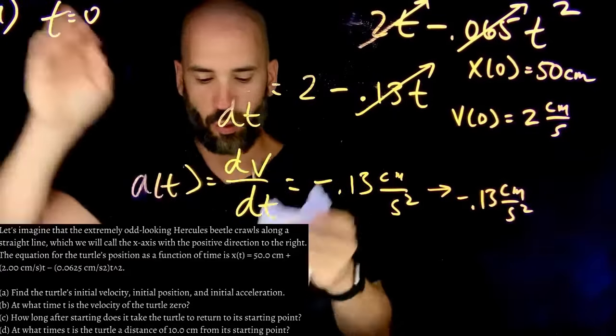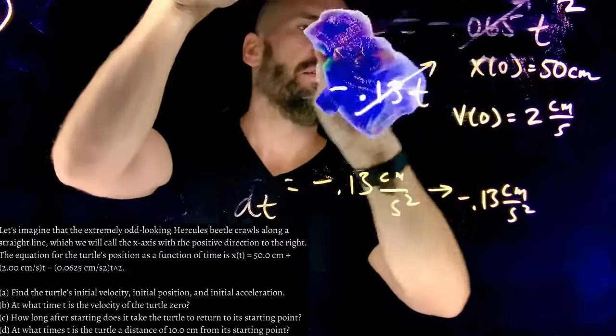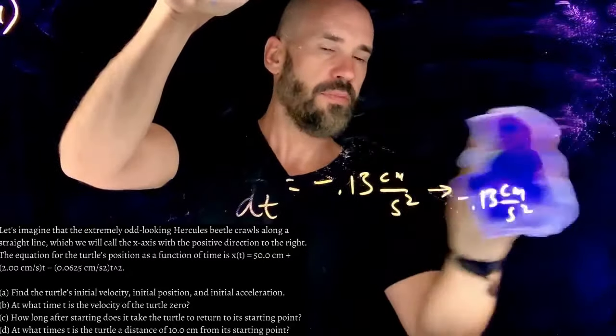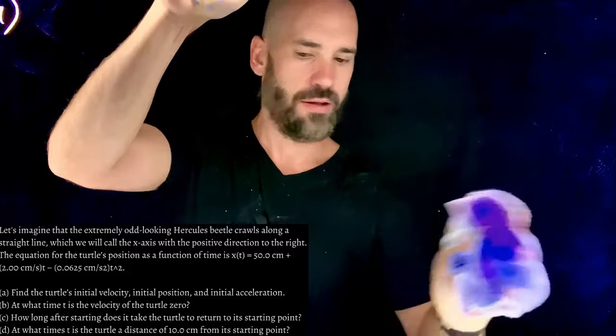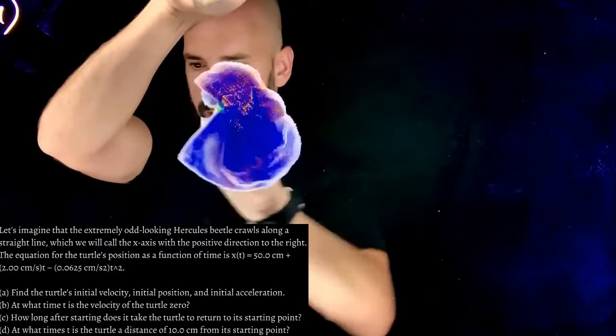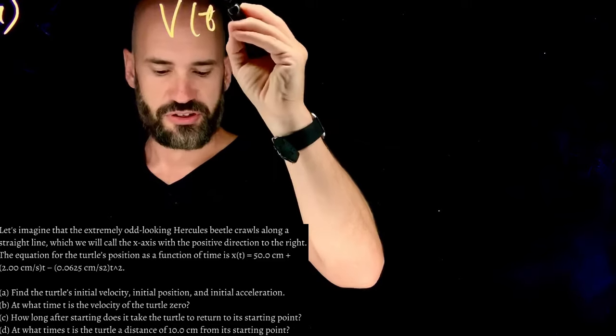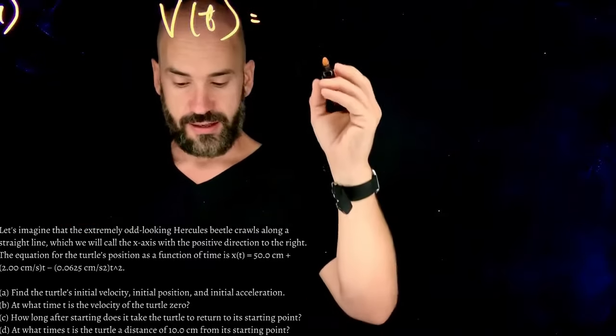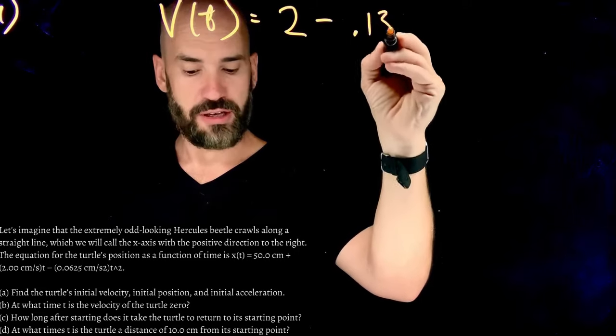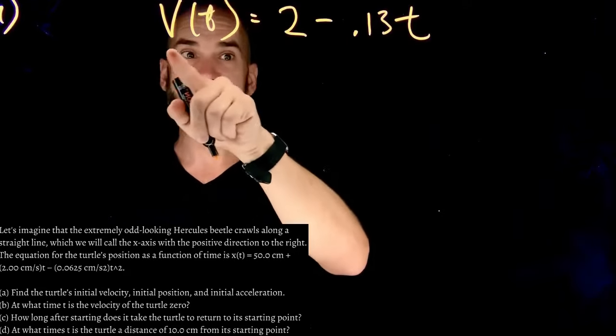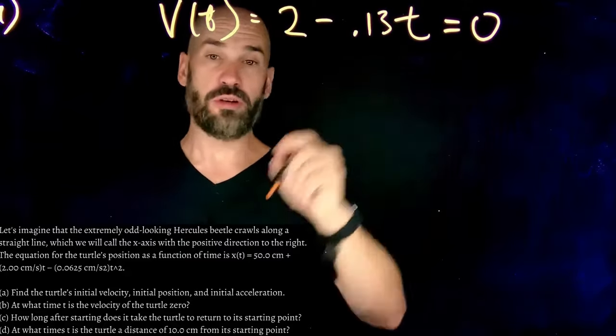Let's rock part B. At what time is the velocity of the Hercules beetle 0? When is the velocity of this Hercules beetle that's moving around 0? So we're going to have to go back to the velocity function, which I believe... Go back to the velocity function. The velocity function, v of t, was just the derivative of the position function, which was... I got 2 minus 0.13 t. So we want to find out when is this velocity 0? Well, you guys know this from math. You just set that equal to 0. Find out what t will give you a 0 v.